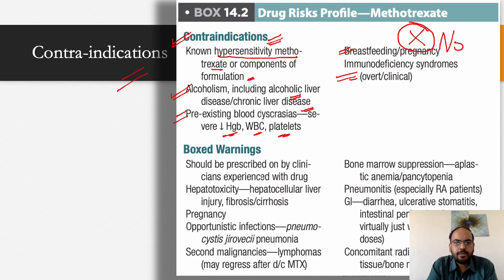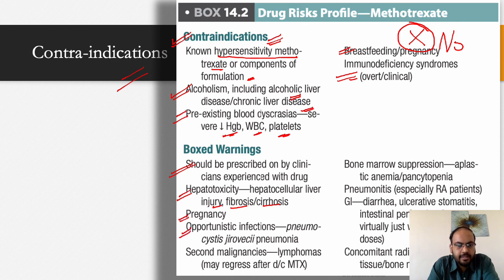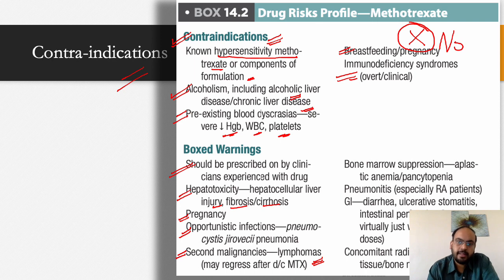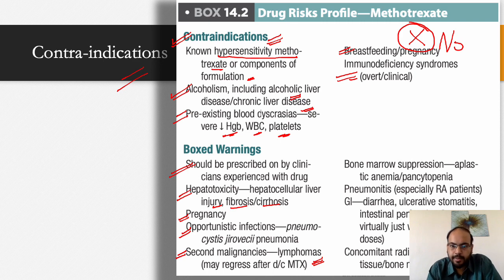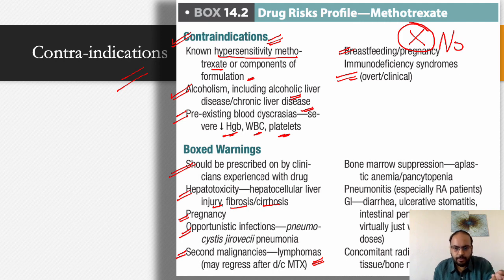Boxed warnings for methotrexate include: hepatotoxicity (liver cirrhosis, fibrosis, injury), pregnancy, opportunistic infections, and secondary malignancies such as lymphomas. EBV-induced and B-cell lymphomas are more common with methotrexate therapy, though many regress when methotrexate is stopped. This is because methotrexate's immunosuppression reduces the normal surveillance mechanisms that prevent these malignancies.